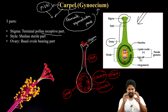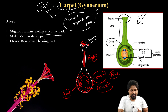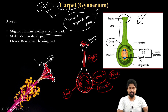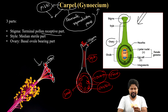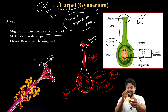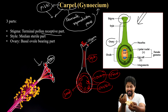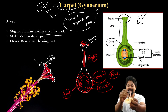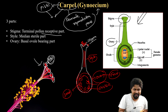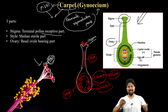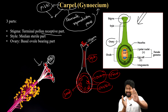So this was all about the carpel structure. Carpels can be separate or fused — if they are separate, they form individual units; if they are fused, they form a single compound structure. This fused condition is particularly common. Carpels show different morphological conditions, similar to how stamens can vary.